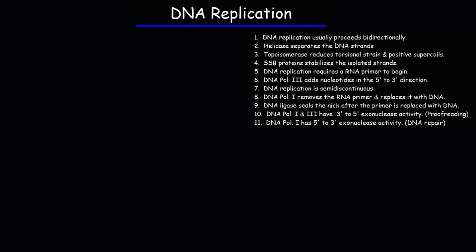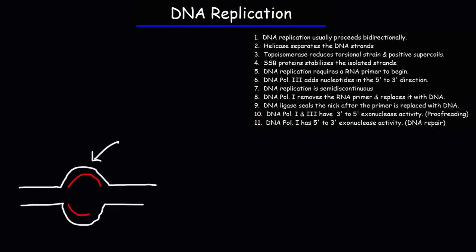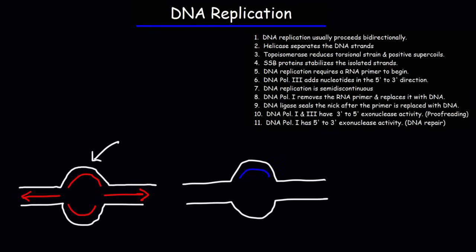DNA replication usually proceeds bidirectionally. The bubble you see between the two strands is the origin of replication. In bidirectional DNA replication, new strands can be produced in both directions. Another type is unidirectional replication, which occurs when the strand is being synthesized in only one direction.